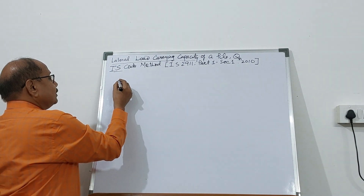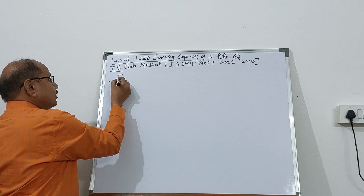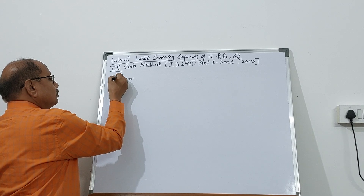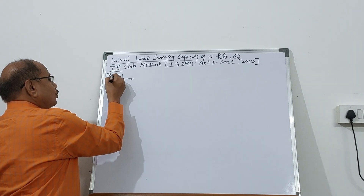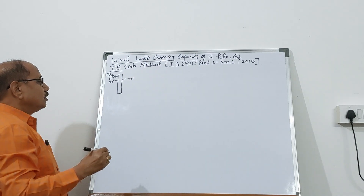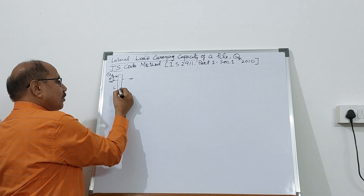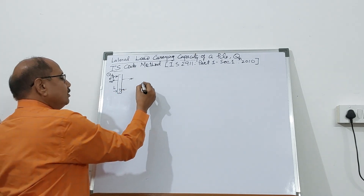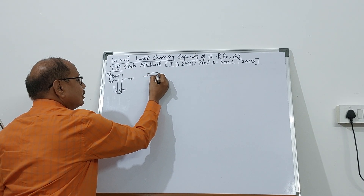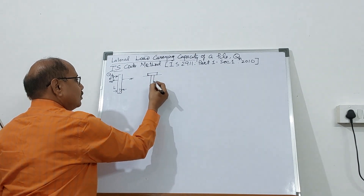Let's see that this is a pile — a free-headed pile. This pile is embedded into the ground. The lateral force is applied, eccentricity is given as E, the length of the pile is L, and the lateral dimension of the pile is D. This is a free-headed pile, or it could be a fixed-headed pile.